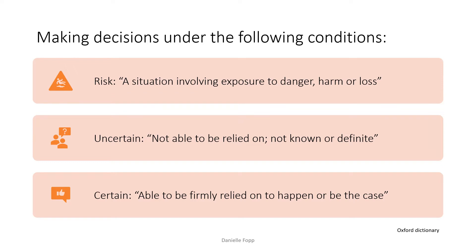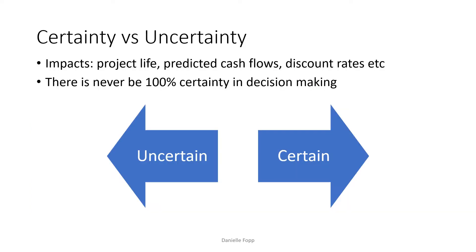Let's start with a few definitions from the Oxford Dictionary. Risk can be defined as a situation involving exposure to danger, harm or loss. It's important to remember that each client will have different risk factors based on their perceived danger, harm and loss items. Uncertainty is something that is not able to be relied on — it's not known or definite. Certainty is able to be firmly relied on to happen or to be the case. Feel free to come back to this slide if you need a refresher on these.